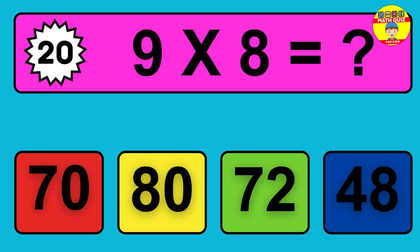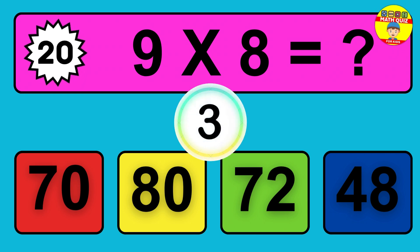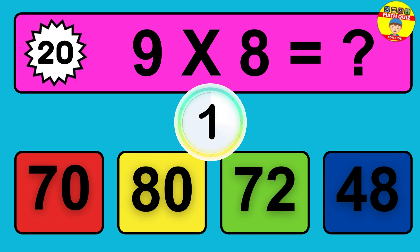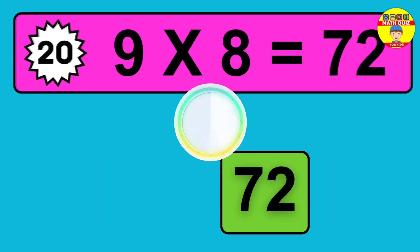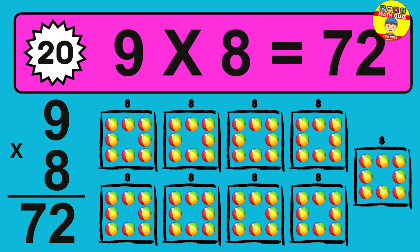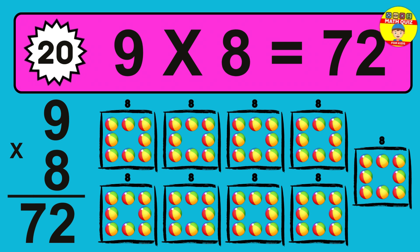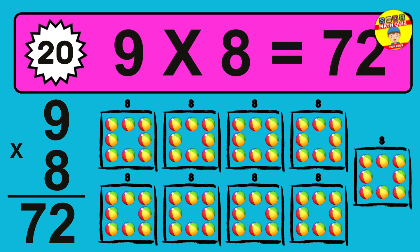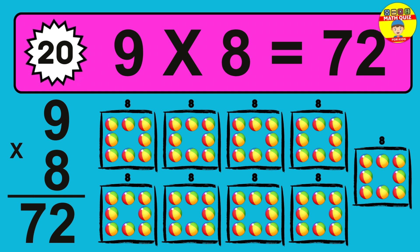Question 20. Nine times eight equals what? So the answer is nine times eight is seventy-two. To calculate, we have nine groups with eight balls each one. So how many balls do we have? Seventy-two balls.